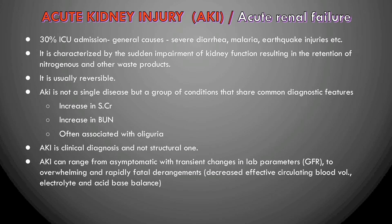Acute kidney injury is not a disease in isolation but a condition characterized by specific symptoms. It is marked by increases in serum creatinine and blood urea nitrogen, and is often associated with oliguria — low urine output. AKI is a clinical diagnosis, not a structural one; the structural diagnosis refers to the underlying kidney damage itself.